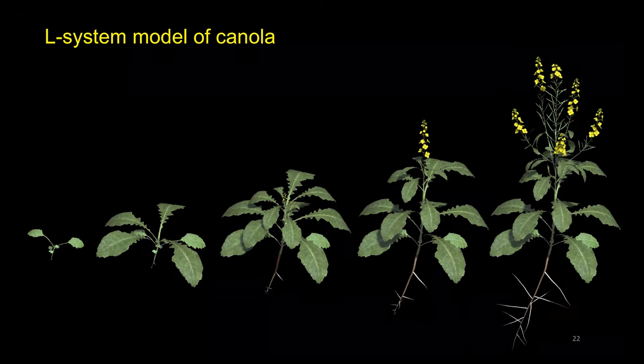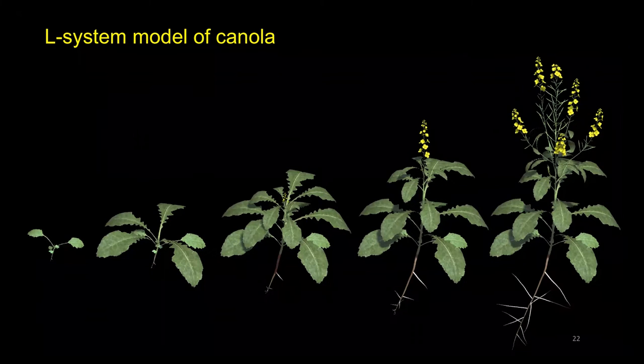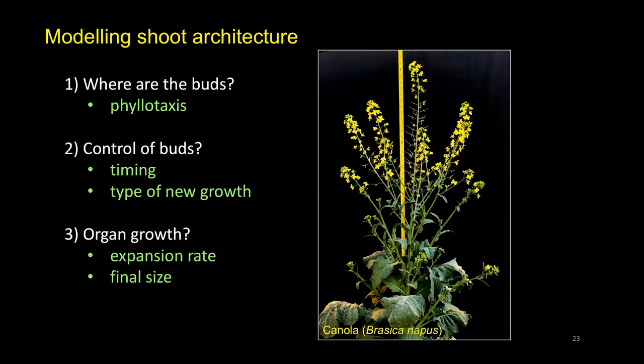The question then becomes, how do we calibrate our model to the various phenotypes in our Laminatech dataset? We need to answer questions like, where are the buds and other organs located? How are they arranged with respect to their parent branch? Which buds will produce new growth? In what direction? And will it be vegetative or reproductive? And finally, how fast do organs grow? And what is their final size?